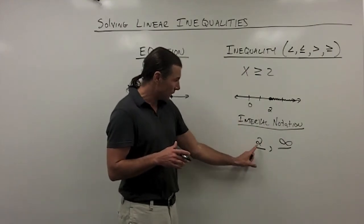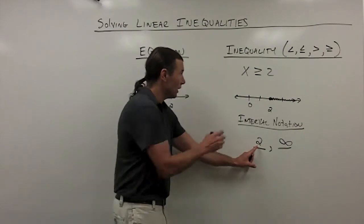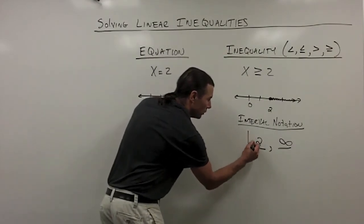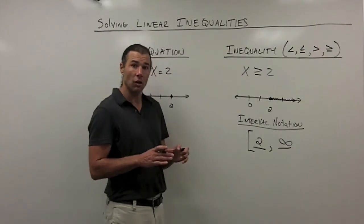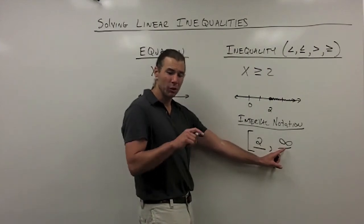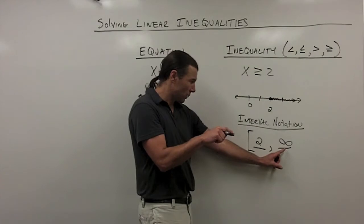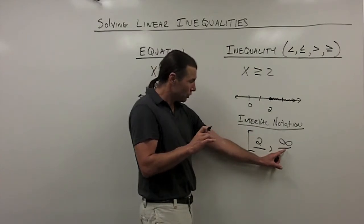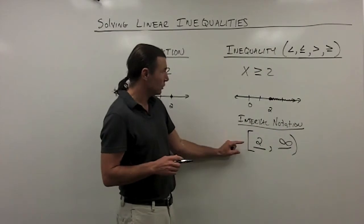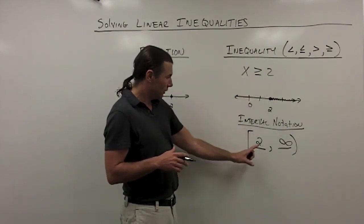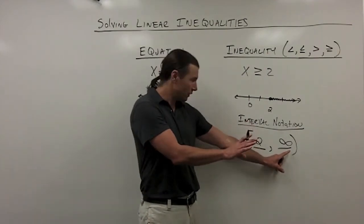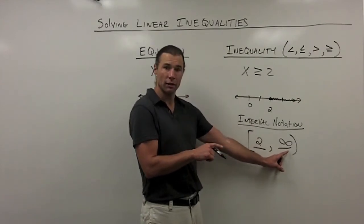Since x is greater than or equal to 2, we want to indicate that 2 is included in the solution set. We use a bracket around values that are included. Infinity is vague — we can't put our finger on it — so we don't include it and use a parenthesis on that side instead. So the interval notation for this solution set is [2, ∞): a bracket at 2 to show it's included, and a parenthesis at infinity to show it's not.